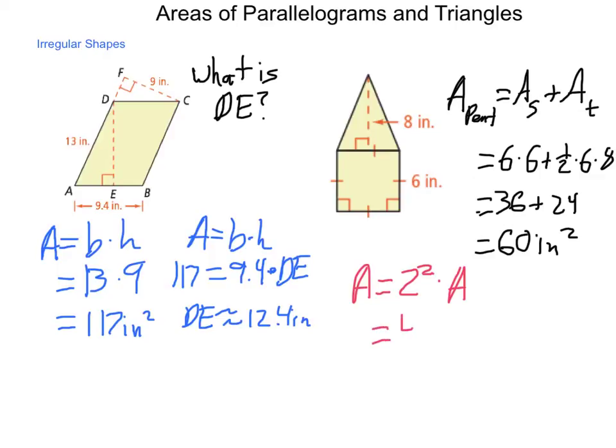So the area of this larger figure is going to be 2 squared times the area of the smaller one. So 2 squared is 4, the area of the smaller one is 60 inches squared. So what we come up with is 240 square inches for the enlarged figure.